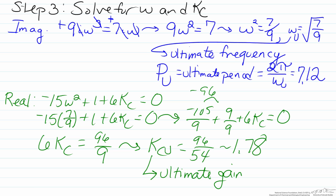So in this screencast we've shown how direct substitution can be used as a means to assess the stability of a controlled process.